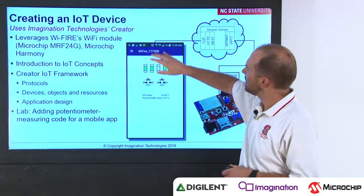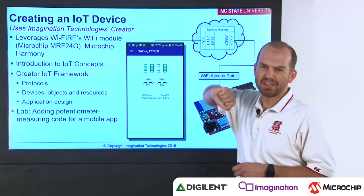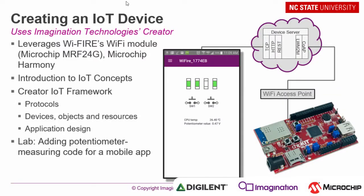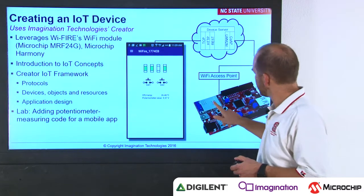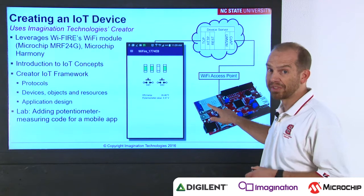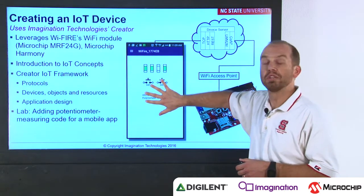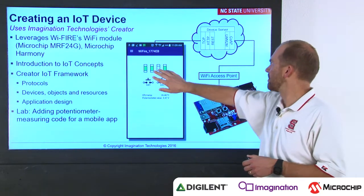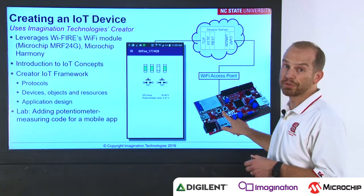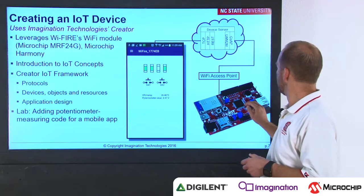The course also contains a focus on creating Internet of Things devices. In this module we learn how to create an IoT device using the Imagination Technologies Creator IoT framework. We learn about the protocols, devices, objects, and resources represented within that framework and application design. This lab uses the Wi-Fi module which allows communication to a wireless access point and to the Internet. You can use an Android smartphone app to communicate with and control this device — switch LEDs on and off, read the status of switches on the board, read the CPU temperature, and read the potentiometer value.